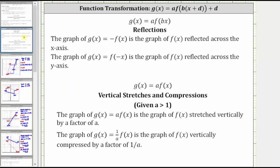For a quick review, when we have g of x equals a times f of x, we have a vertical stretch or compression. Given a is greater than one, if we have g of x equals a times f of x, the graph is vertically stretched by a factor of a. If we have g of x equals one divided by a times f of x, then the graph is vertically compressed by a factor of one divided by a.